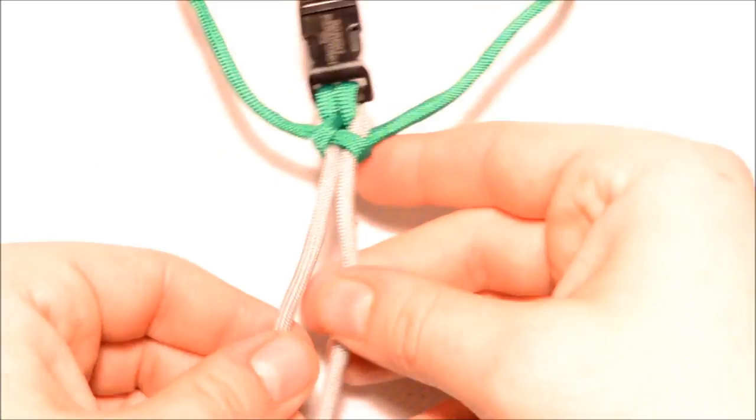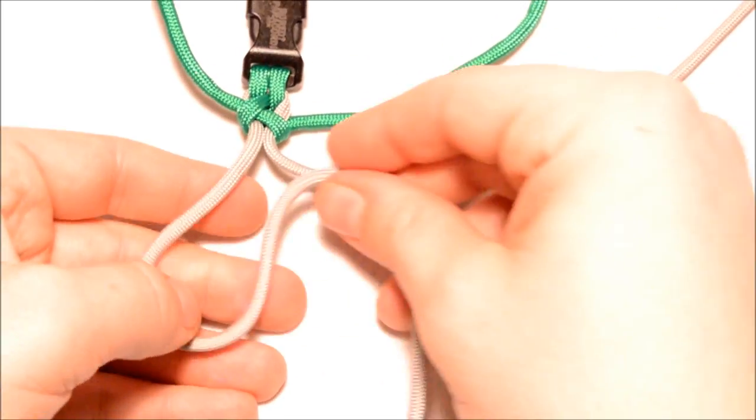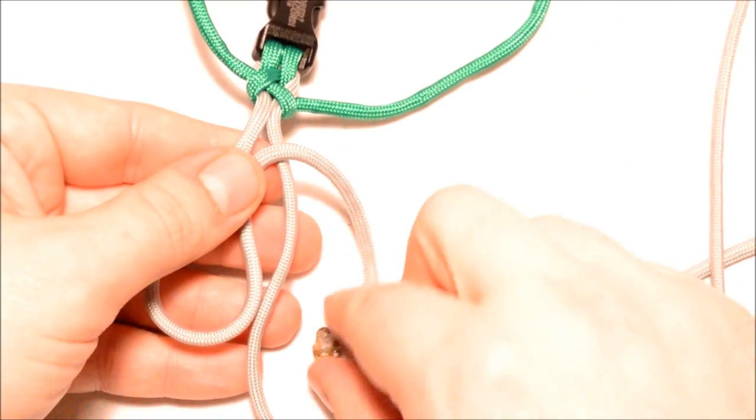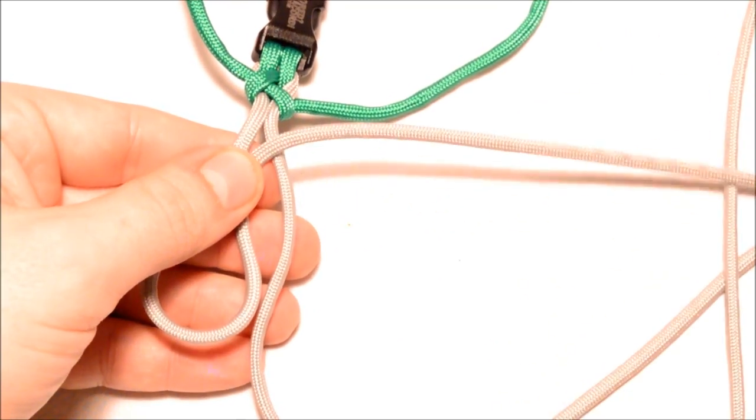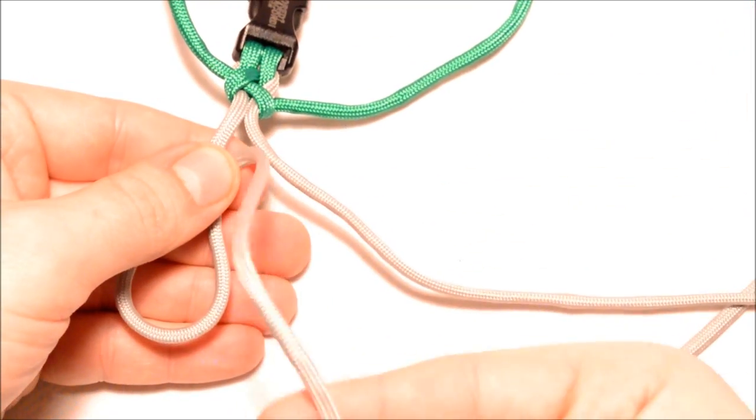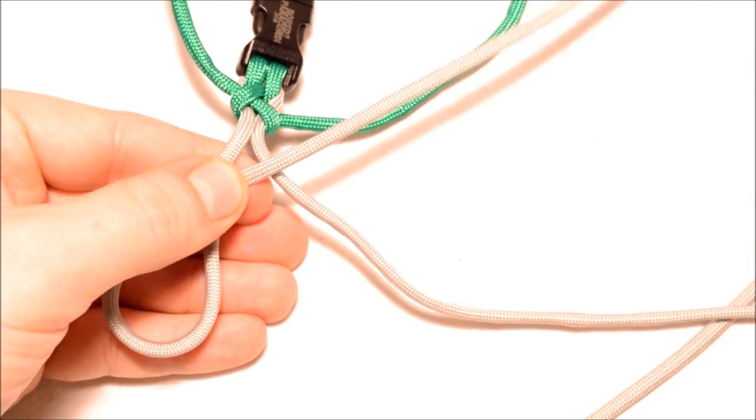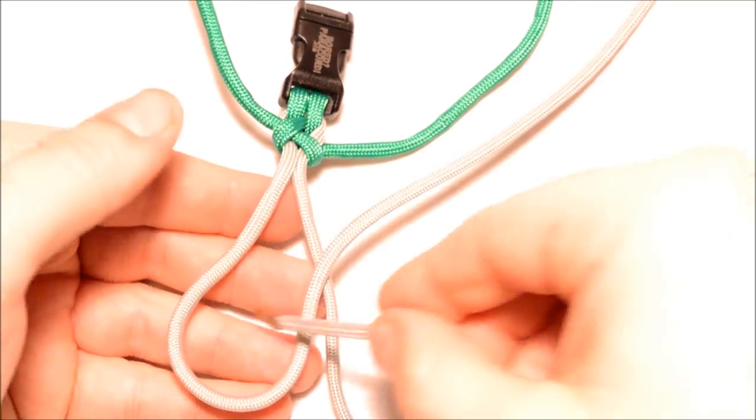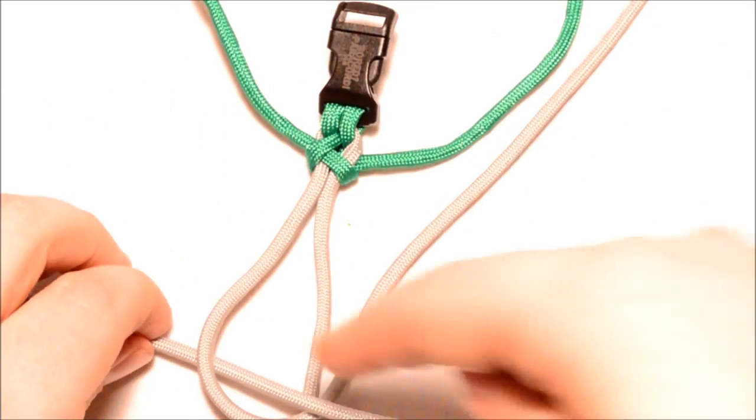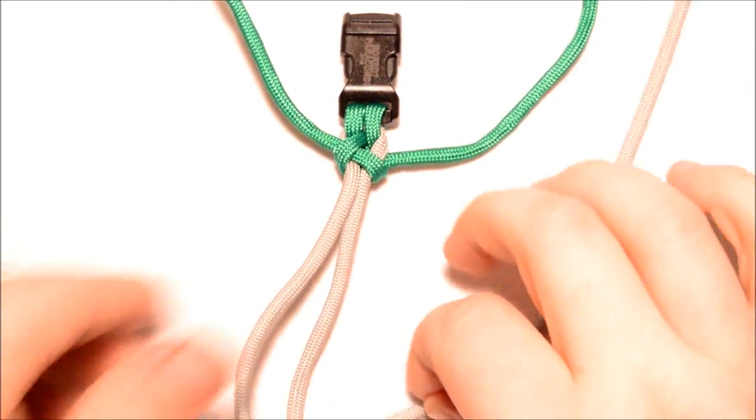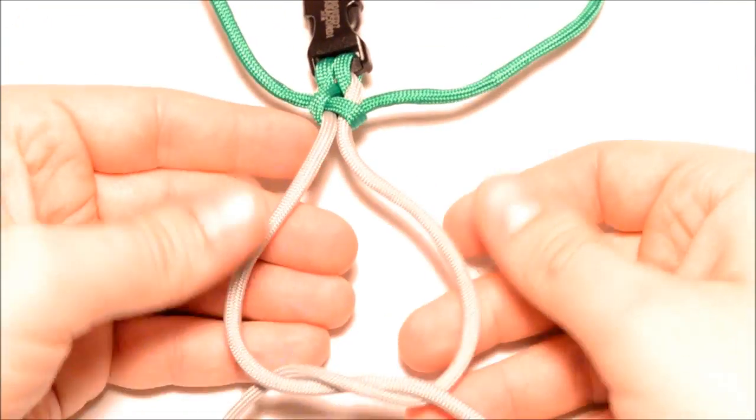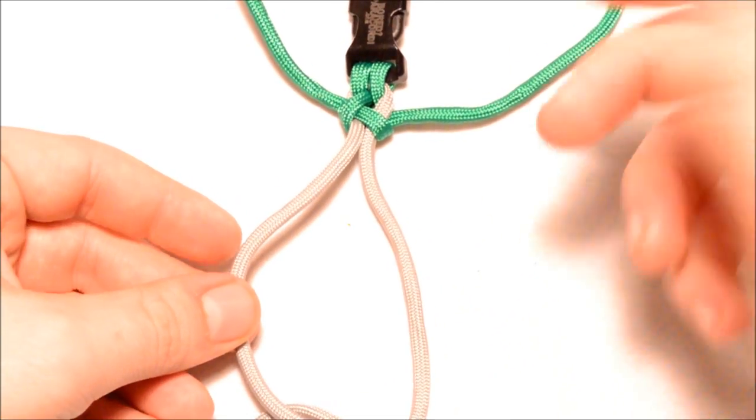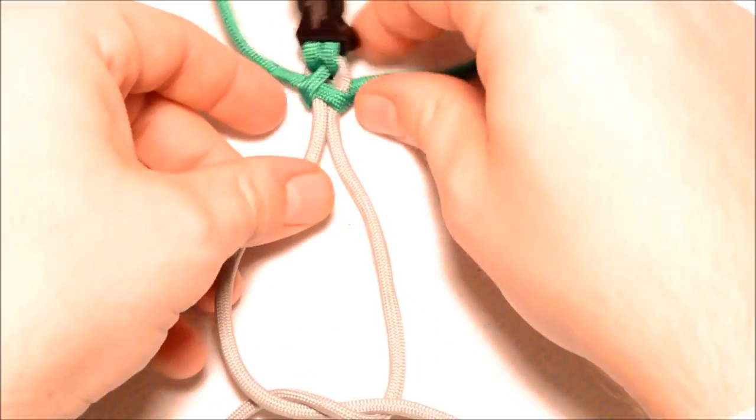Now you're just going to repeat that same process. So create a loop. Now you want to make sure that this loop, the one on the left, is looped over the right like that. And then just basically go down through the bottom, or go down through the top of that, and that will create a knot. You're really just creating this tie right here. So, any way you want to do it. As long as you get this result, you're good.